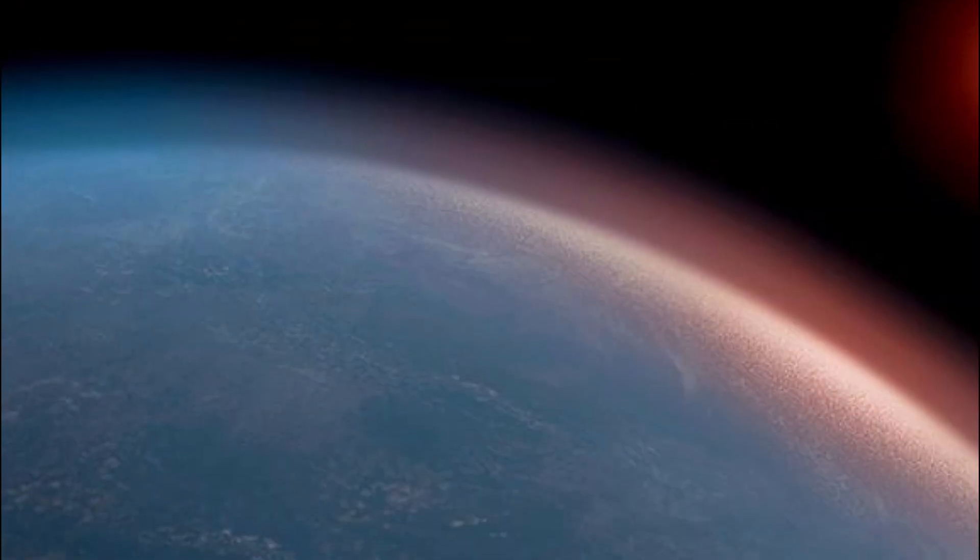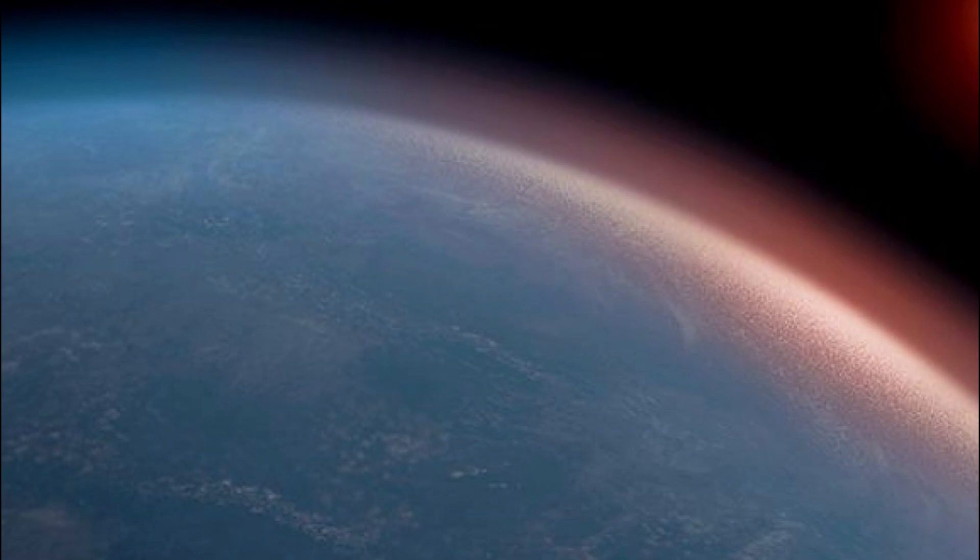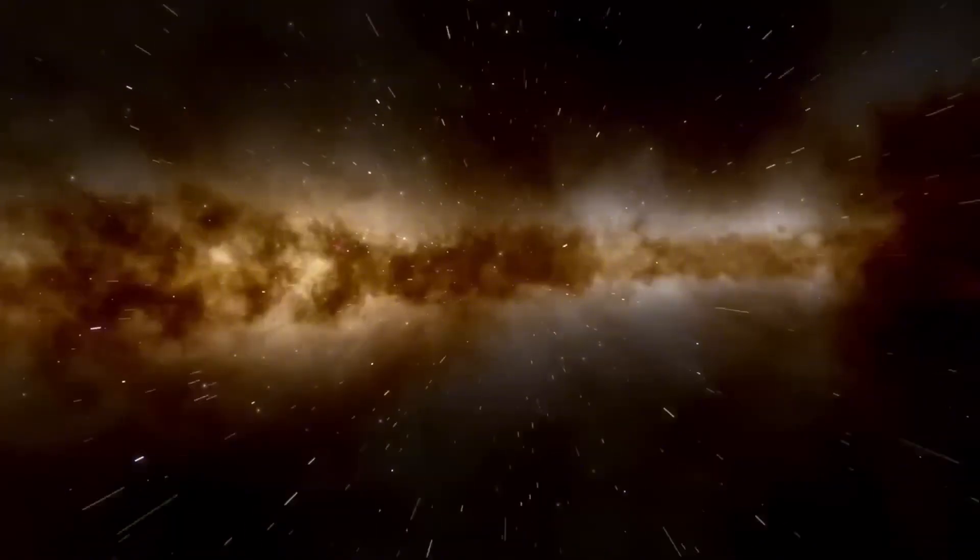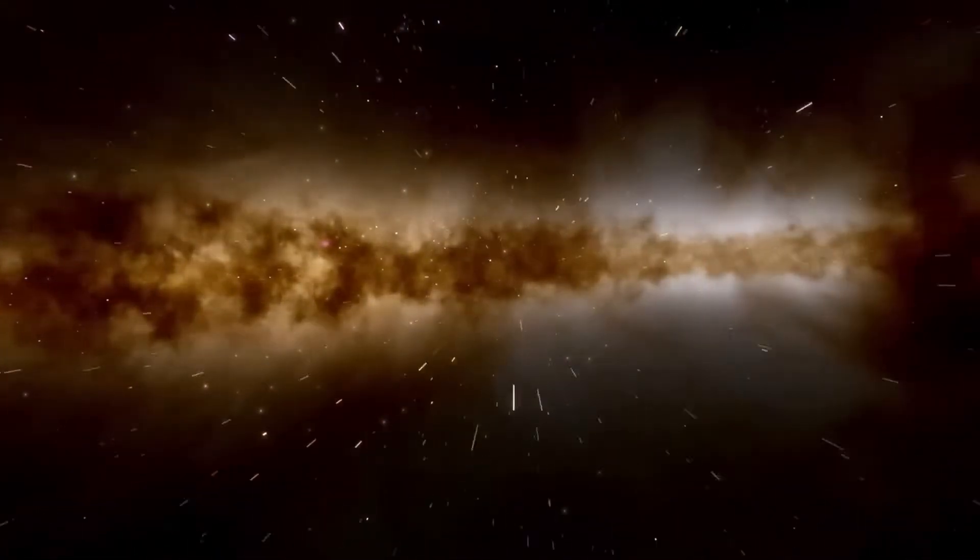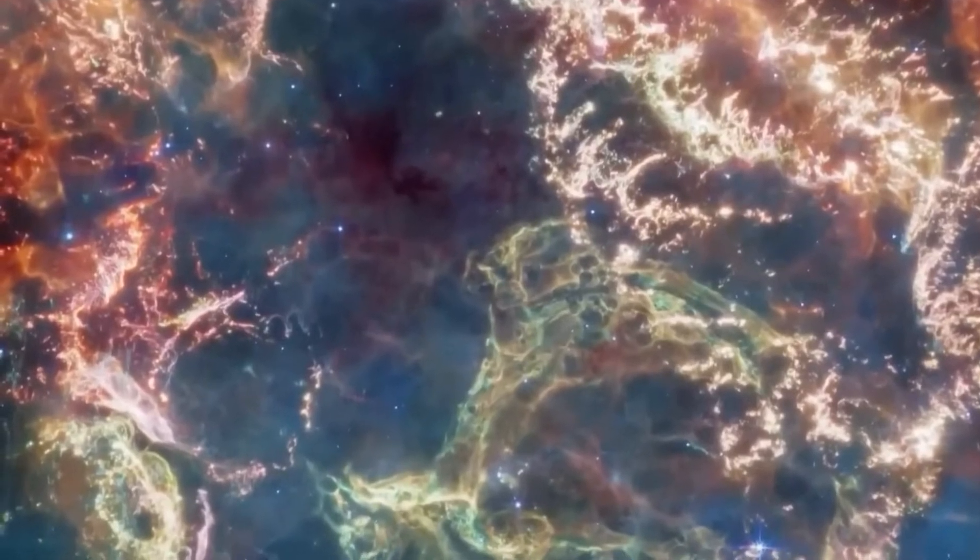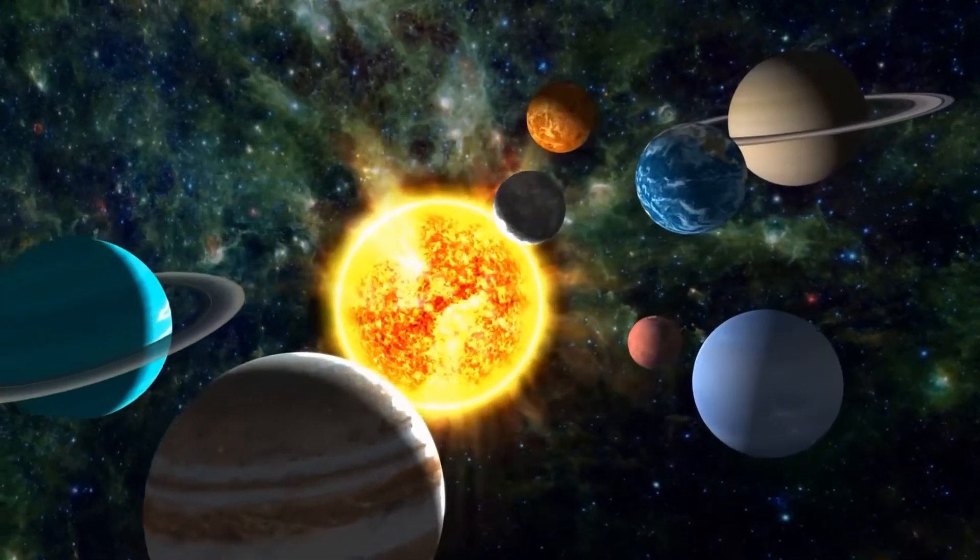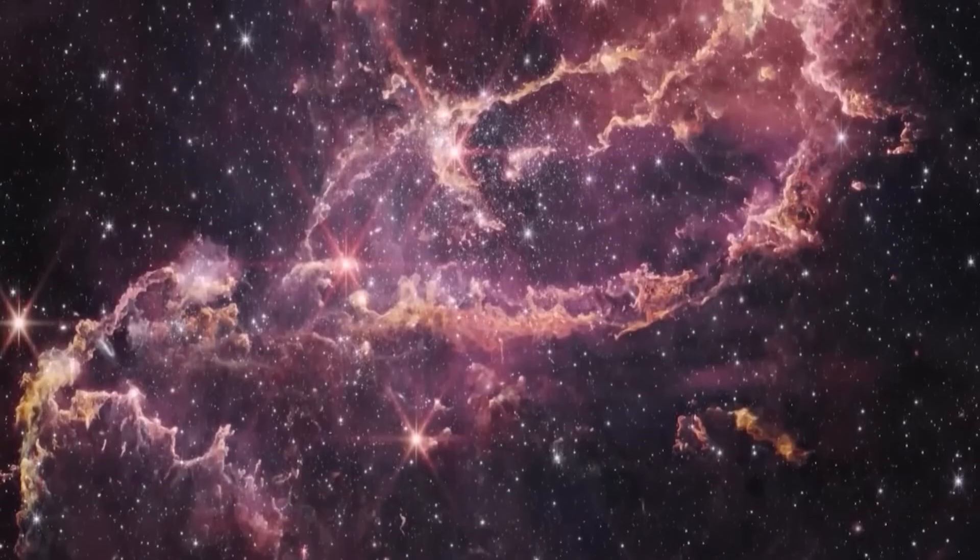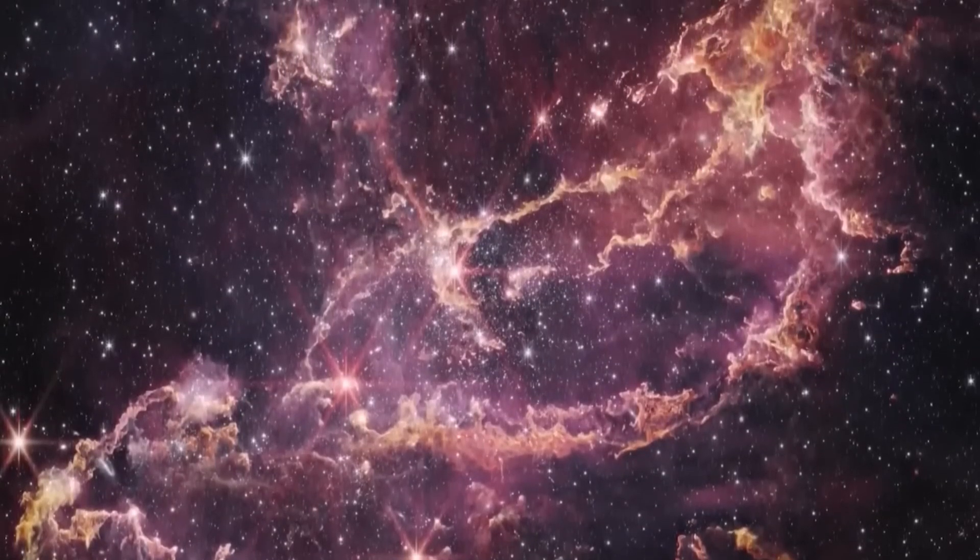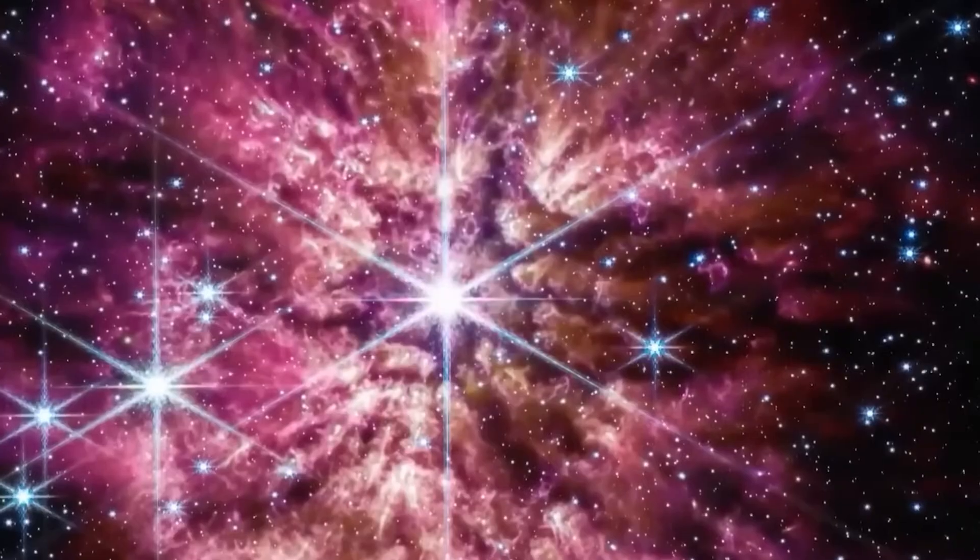Exoplanets like K2-18b, known as sub-Neptunes, are unlike anything in our solar system. They're neither rocky like Earth, nor fully gaseous like Neptune. While our solar system lacks them, they're common across the galaxy. This raises exciting questions. Why don't we have them? What makes them form elsewhere? And could they be home to life?